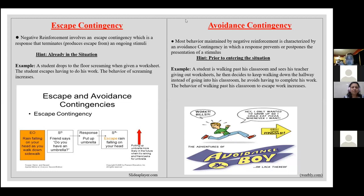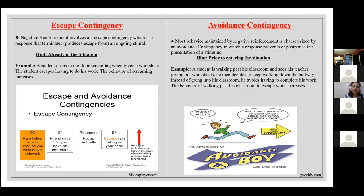Then we have avoidance contingencies. Most behavior maintained by negative reinforcement is characterized by an avoidance contingency, in which a response prevents or postpones the presentation of a stimulus. The key hint: avoidance is prior to entering the situation — escape means you're already in it. Example: a student walking past a classroom sees his teacher giving out worksheets; he keeps walking down the hallway to avoid completing the work; the behavior of walking past increases. I included an image — 'I only wanted to grow up so I could eat pizza whenever I want' — he's running away from adulting.